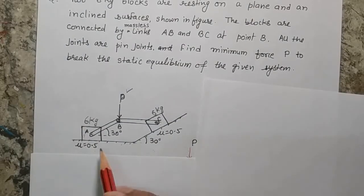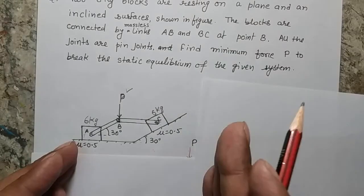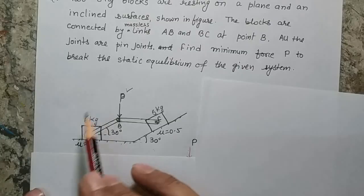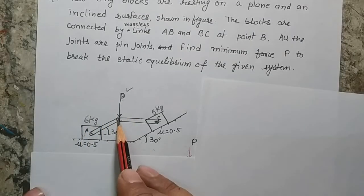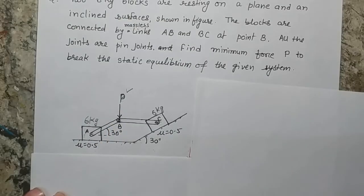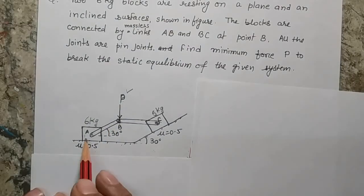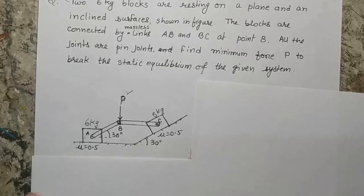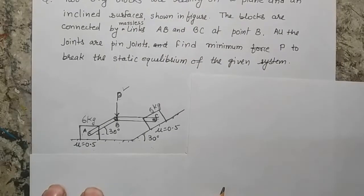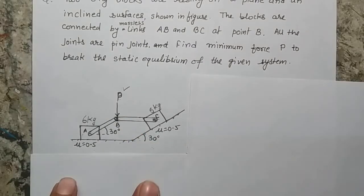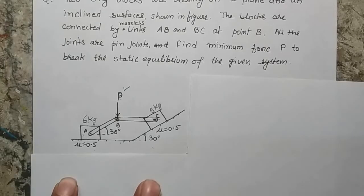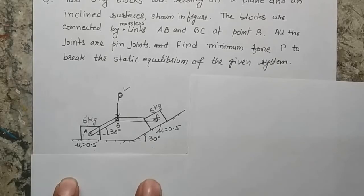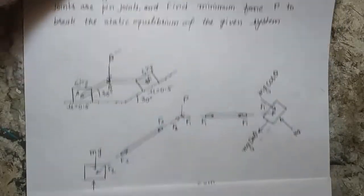Currently the system is as given in the question — this is the configuration we have, and we are applying force P at this point. If we increase P from 0, at a certain point either block A or block C will move, or both blocks will move simultaneously, disturbing the equilibrium. We need to calculate which block will move first.